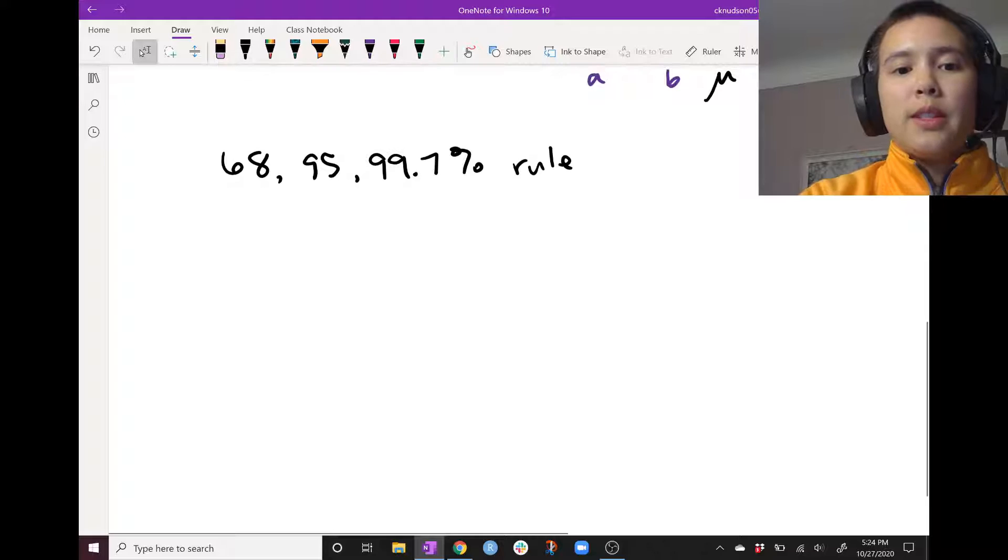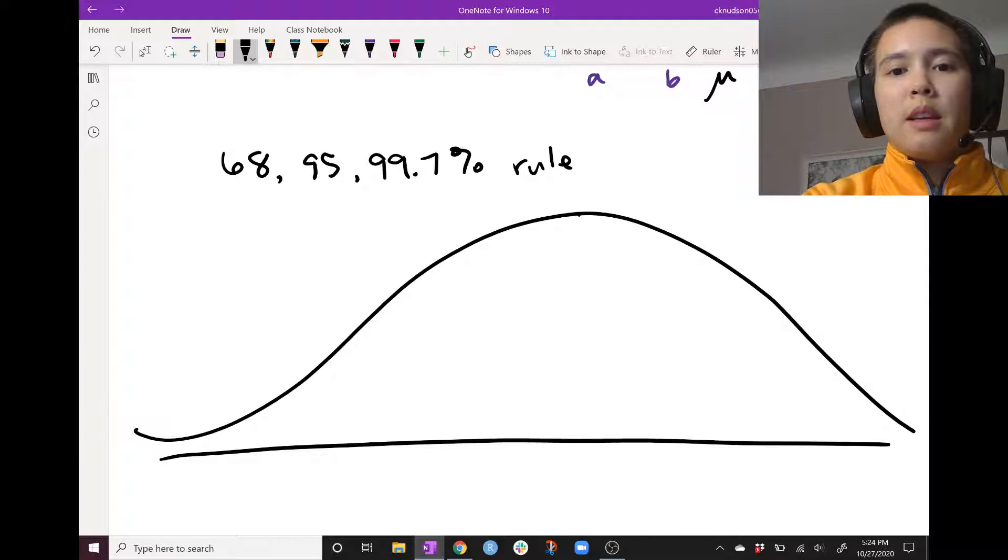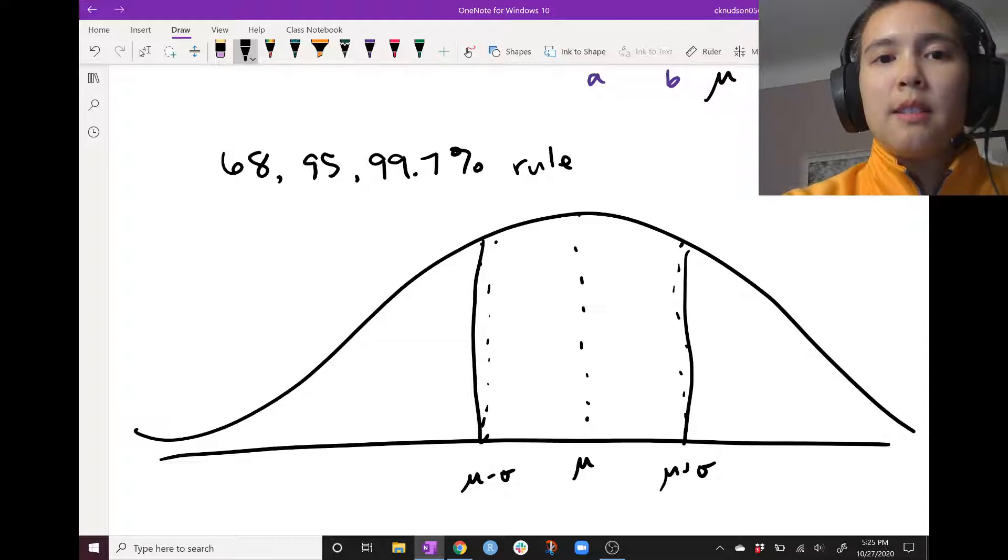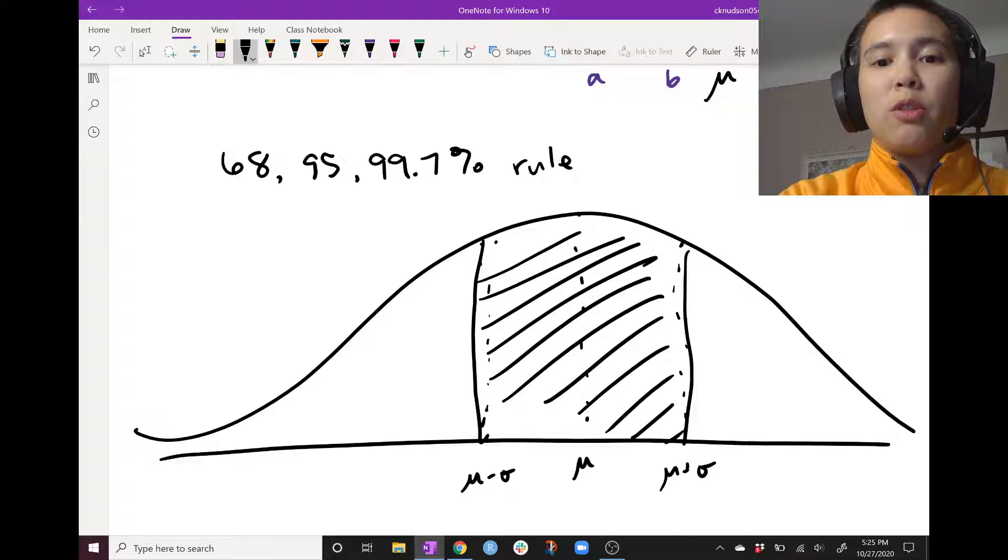And what this says is that if we look within one standard deviation of the mean, this zone, so mu plus sigma, mu minus sigma, then in this zone, we'll have about 68% of our distribution.